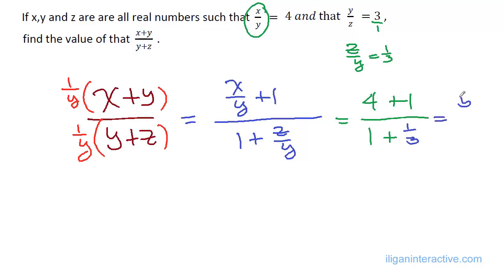So we have 5 over, what is 1 plus 1 third? 3 over 3 plus 1 third will be 4 thirds. And simplifying further, 5 over 1, that 5 there is the numerator times the reciprocal of the denominator, 3 over 4. So the answer will be 15 over 4. That looks simple, right?